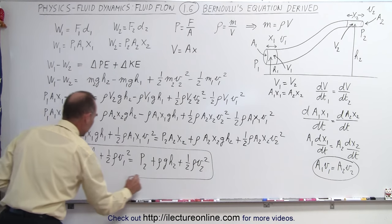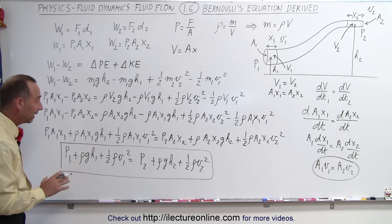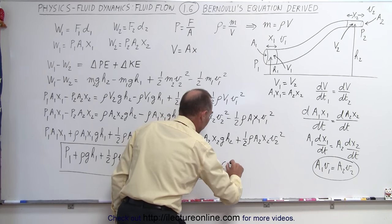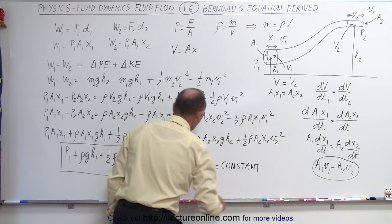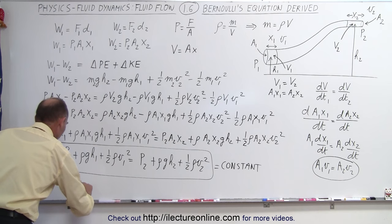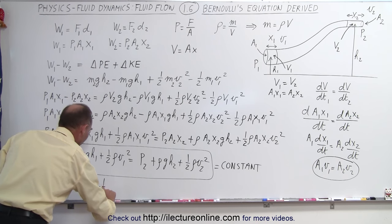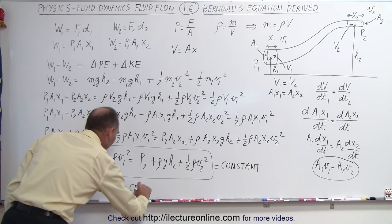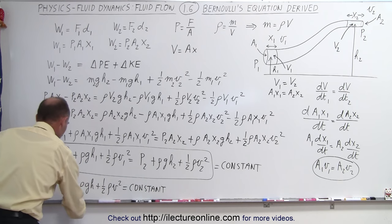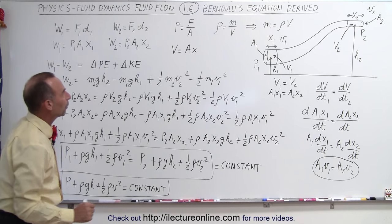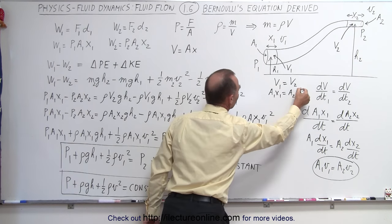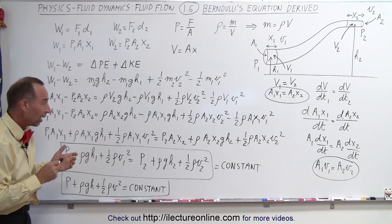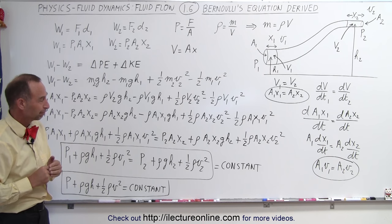And there you have it — that is Bernoulli's equation. Since each side always equals the same constant, we can write it as P + ρ·g·H + ½·ρ·V² = constant. This is the full form of Bernoulli's equation, and that is how it was derived. Thank you.